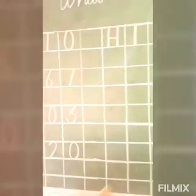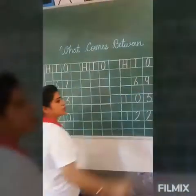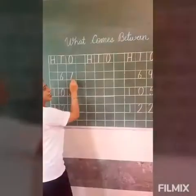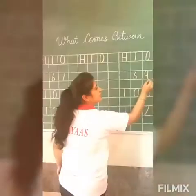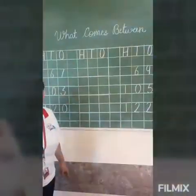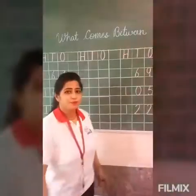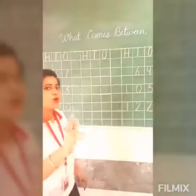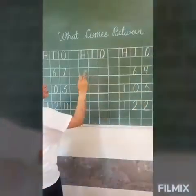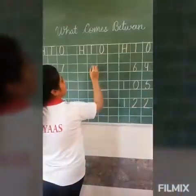And the second number is 69. So tell me, what will come in between 67 and 69? Think about it. Very good — 68! You have to write below the tens and ones.